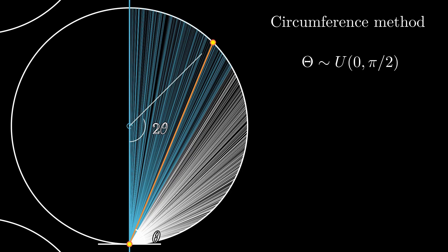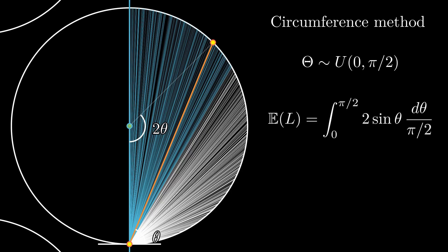With simple geometry, we can see that the chord created subtends an angle of 2θ at the center, and the length of the chord is twice the sine of θ. Therefore, the expected length of the chord in this method is the integral of 2 sin θ with θ uniformly distributed between 0 and π/2. That's about 4/π or 1.27.